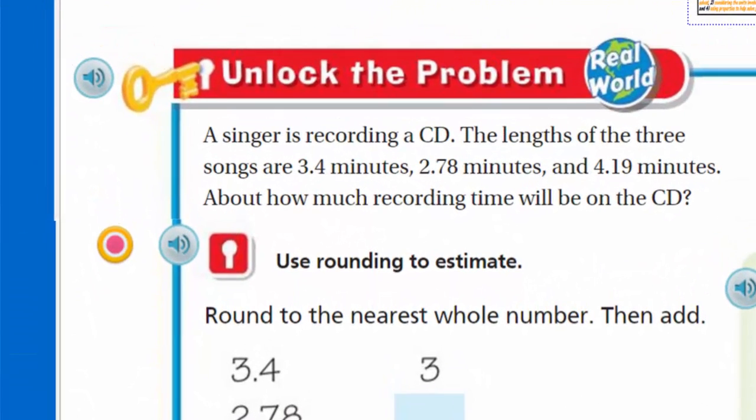A singer is recording a CD. A CD, really? Old school. The lengths of the three songs are 3.4 minutes, 2.78 minutes, and 4.19 minutes. About how much recording time will be on the CD? I love that word 'about.' That lets me know almost immediately that we're looking for an estimate. And it does say use rounding to estimate.